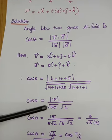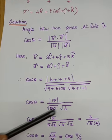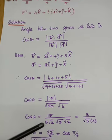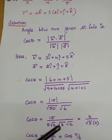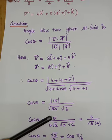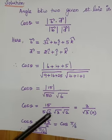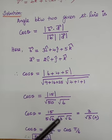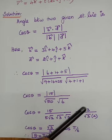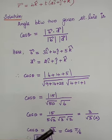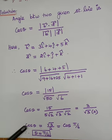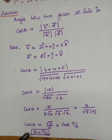Taking the dot product in the numerator gives 15, divided by modulus of B = √(9+16+25) = √50 = 5√2, and modulus of D = √6 = √3·√2. Simplifying: 15 / (5√2 · √3·√2) = 15/(5·2·√3) = 3/(2√3) = √3/2 = cos 30° = cos(π/6). Therefore θ = π/6.